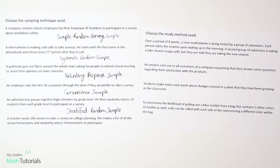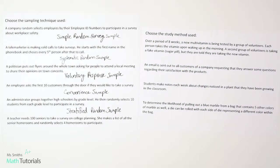A teacher needs 100 seniors to take a survey on college planning. She makes a list of all the senior homerooms and randomly selects four homerooms to participate. The students have been grouped into homerooms, and we don't know that they've been grouped by any particular pattern, so we assume there isn't one. She randomly selects four groups, so everybody in those four homerooms participates, but the other homerooms don't get chosen at all. That's going to be a cluster sample.